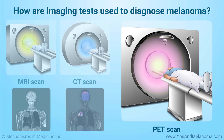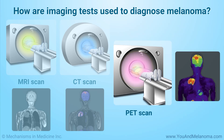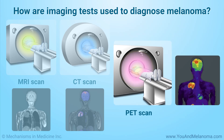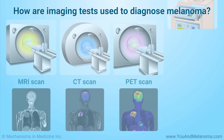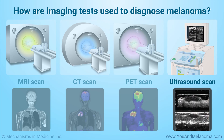In a PET scan, you will be given an injection of a small amount of radioactive sugar. A special camera makes detailed pictures of the areas inside the body where the sugar collects. Cancer cells absorb much more of the sugar than normal cells do. An ultrasound scan uses sound waves to form pictures of tissues and organs on a computer screen.